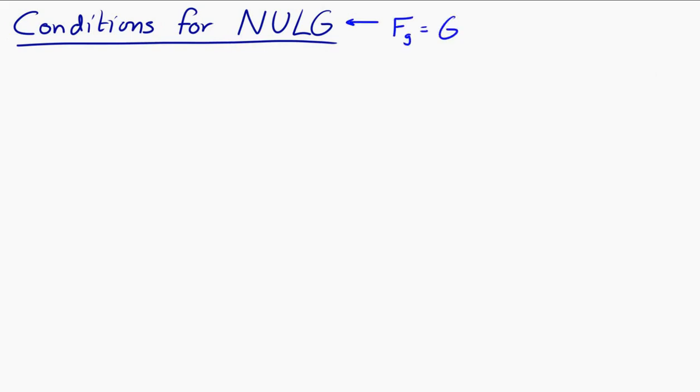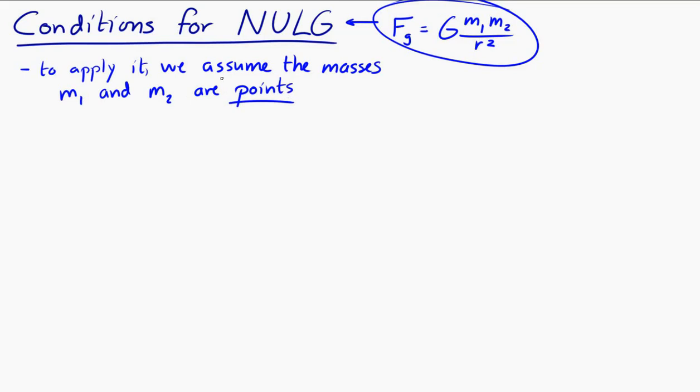Now, let's move on to the conditions for Newton's universal law of gravitation. Technically, to apply Newton's universal law of gravitation, we have to assume that the masses involved are points. Now, in reality, things aren't points. The Earth is not a point. The Sun is not a point. The Moon is not a point. Things are not points. But that is the assumption in Newton's universal law of gravitation. So how the heck do we use it then? If things aren't points, how can we use this law?